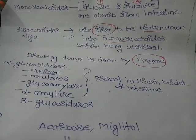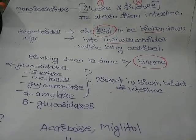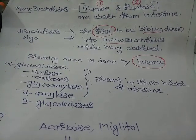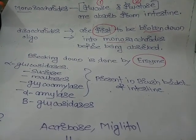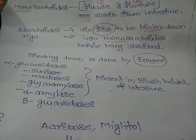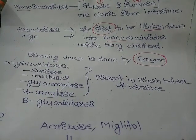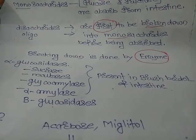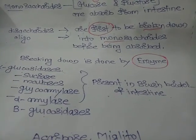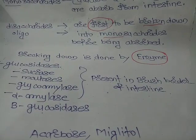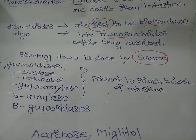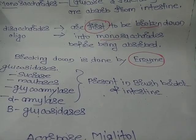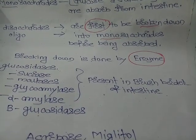That breakdown — from oligosaccharides to disaccharides, and disaccharides to monosaccharides — is done by the alpha-glucosidase enzyme. Alpha-glucosidase is a family of enzymes including sucrase, maltase, glucoamylase, alpha-amylase, and beta-glucosidase. All these enzymes are present in the brush border cells of the intestine.